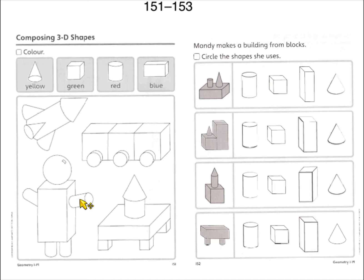All the cones you have to color in yellow. All the cubes you have to color in green. All the cylinders you have to color in red. All the rectangular prisms you have to color blue. But notice, do you see a sphere up there? Then you have to leave all the spheres blank.